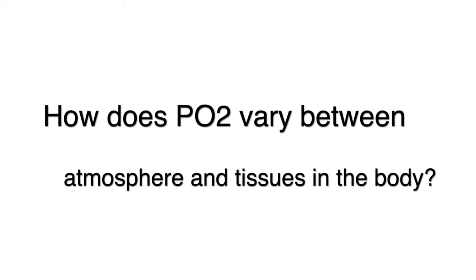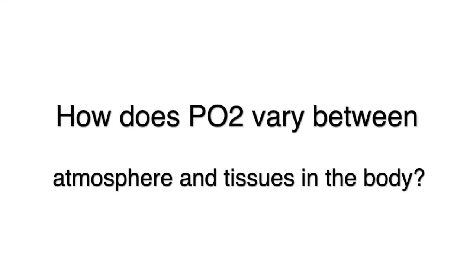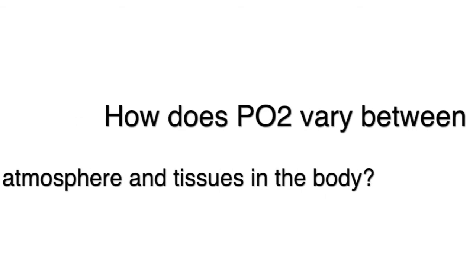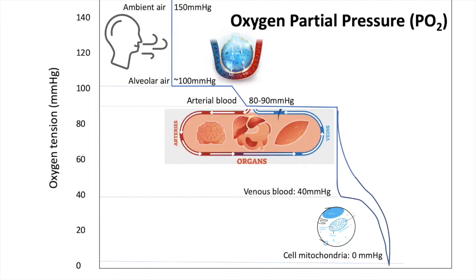How does oxygen partial pressure vary between the atmosphere and the body? Using units of millimetres of mercury, the partial pressure of oxygen in atmospheric air is usually about 150 mmHg. It drops to about 100 in the alveolus inside the lungs, and it drops further to about 80 to 90 in the blood.